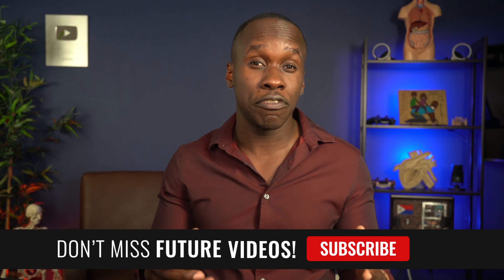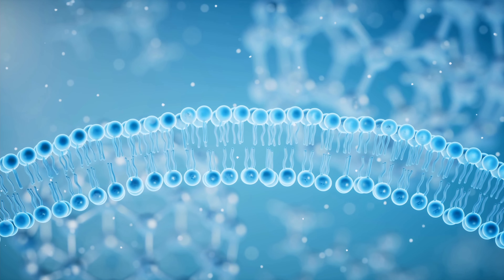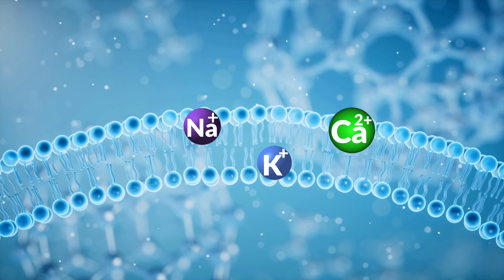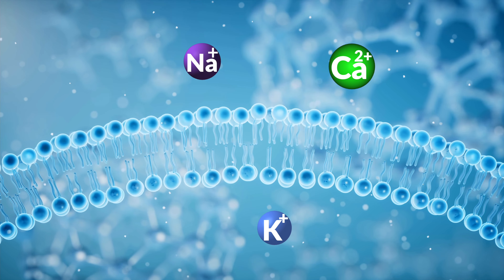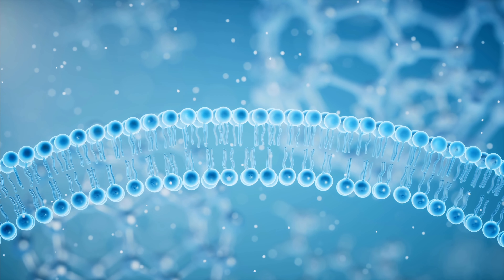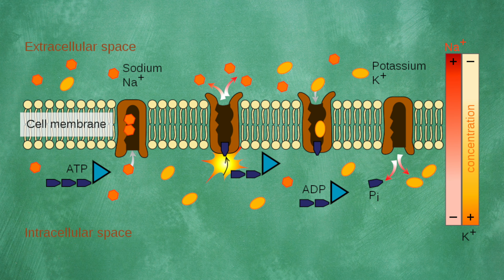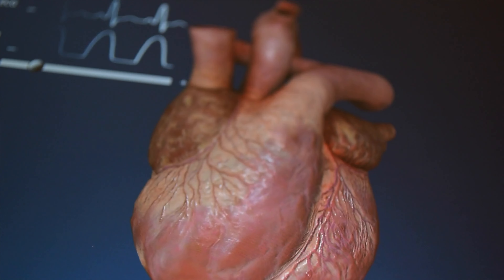You might be wondering: if sodium and calcium keep rushing in and potassium keeps rushing out, won't the cells get filled with sodium and calcium and run out of potassium? Yes, that would happen if there weren't other mechanisms in place. We have special pumps in the membrane that restore the distribution of ions. One example is the sodium-potassium pump, which actively pumps three sodium ions out while pumping two potassium ions in. These pumps allow this amazing process to continue over and over.